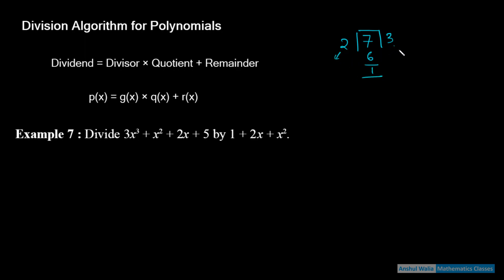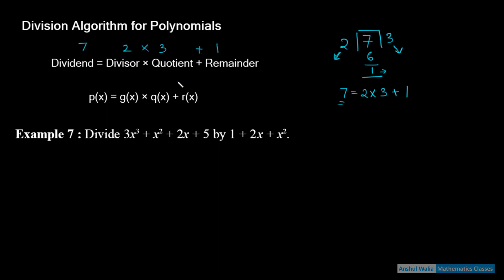यहाँ 2 मेरा divisor है, 7 मेरा dividend है, 3 मेरा quotient है, और 1 मेरा remainder है। तो इसको division algorithm में लिखते हैं: seven = two × three + one। Dividend = divisor × quotient + remainder।